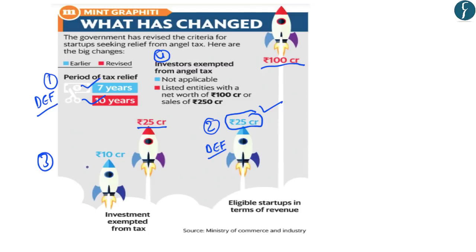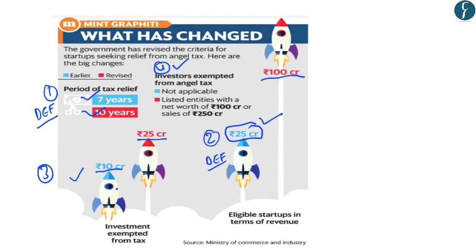The criteria for tax concession have also been relaxed for both startups and investors. Previously, startups could avail tax exemption from angel tax only if investment did not exceed ₹10 crore; now this limit has been increased to ₹25 crore. Similarly, for investors, there was previously no exemption from angel tax; the new rules state that investment by listed companies with a net worth of around ₹100 crore or net sales of ₹250 crore shall be exempt from income tax even if the investment is beyond the ₹25 crore limit.